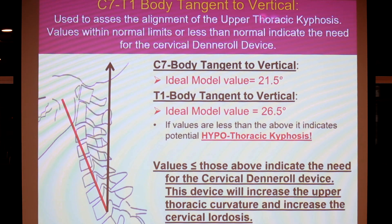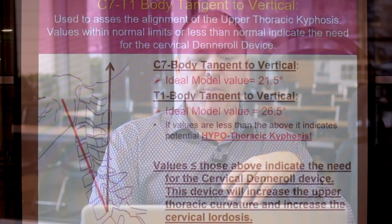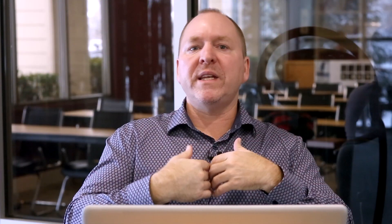C7-T1 body tangent to vertical — we're going to use this measurement to determine whether somebody needs the dental roll down in their lower cervical spine, or what exactly is happening to the upper thoracic spine. The C7 body tangent tells me where I'm going to use the dental roll and what translation problem or hyperkyphosis I have. Ideal values for the T1 body tangent — the back of T1 relative to a vertical line originating at the posterior inferior corner of T1 — should be in the mid-20s. The literature now clearly establishes a normal range of 20 to 40 degrees. We showed the ideal model was 26.5 degrees.